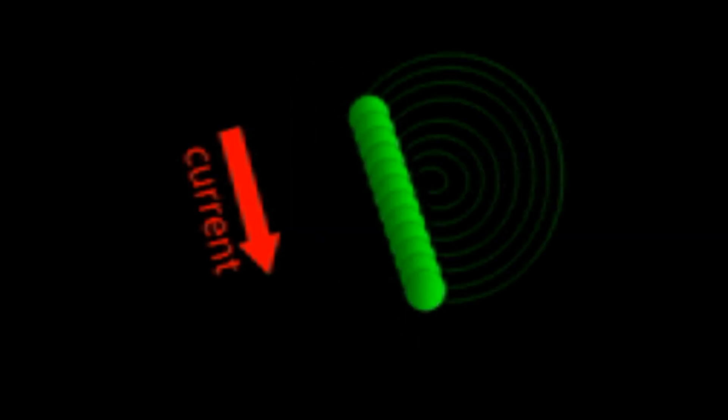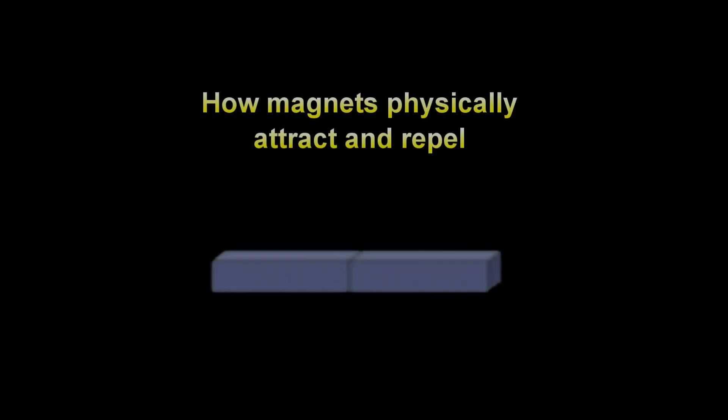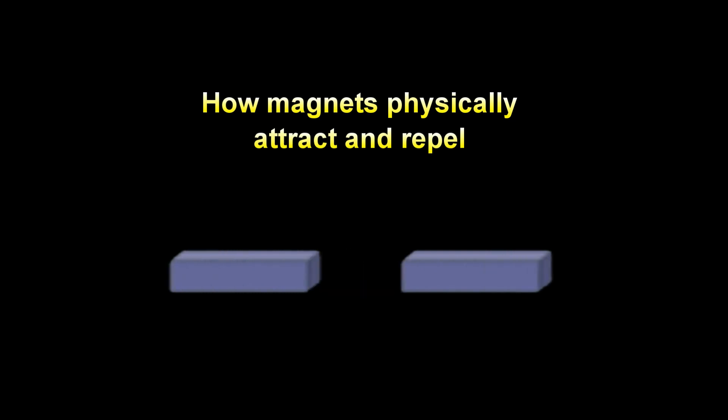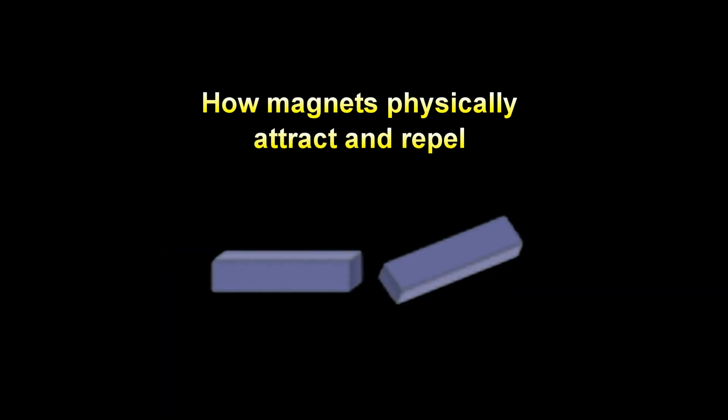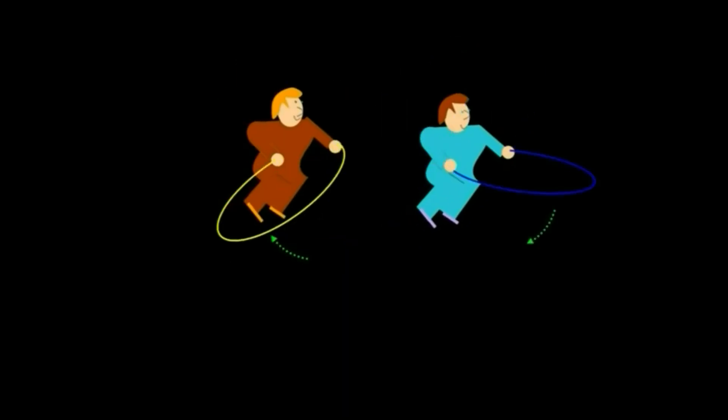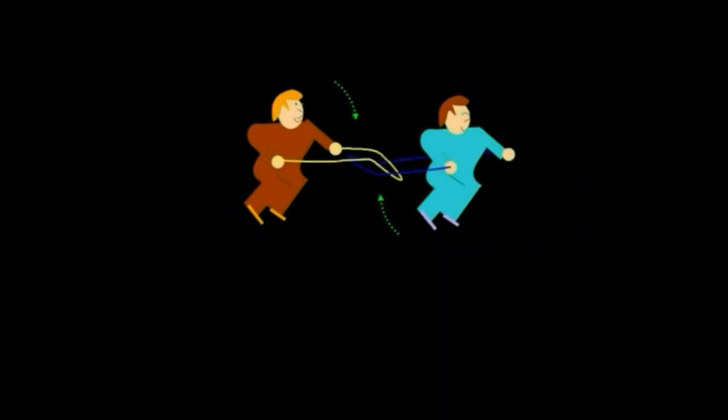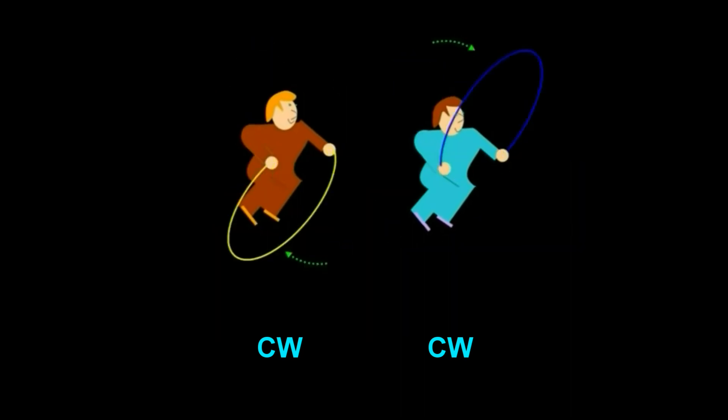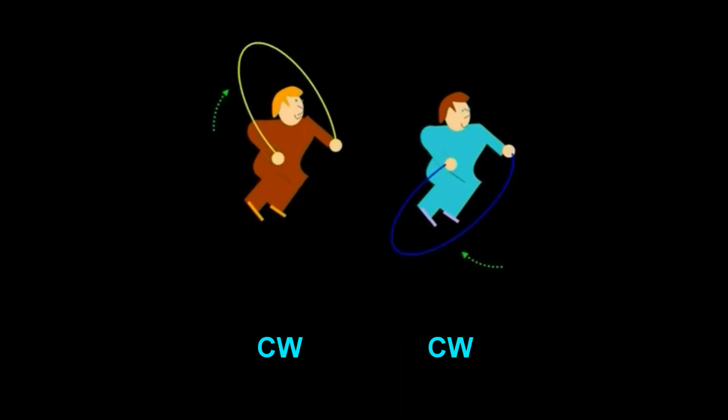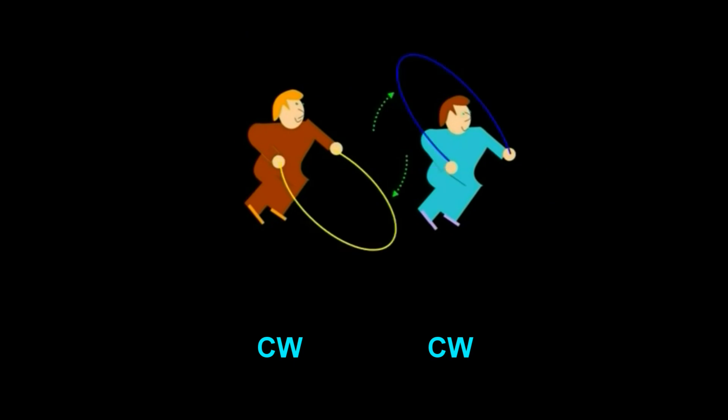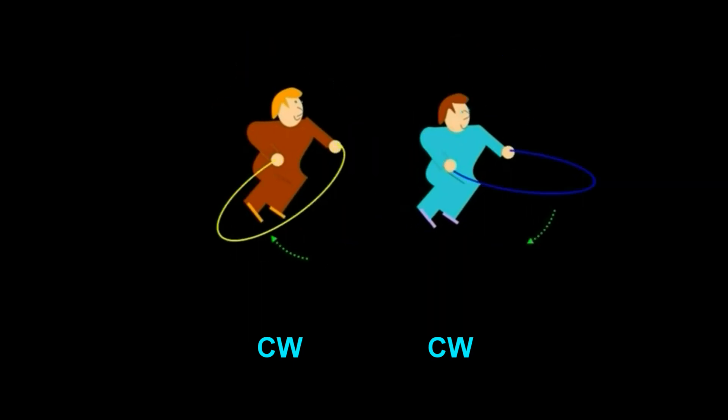Let's now visualize how these swinging threads produce attraction and repulsion. We begin with an analogy to get a grip on the basic mechanisms. Imagine two brothers, Axel and Rod, skipping next to each other. Their ropes are swinging clockwise. The ropes interact. Axel and Rod are drawn toward each other as a result of this interaction.